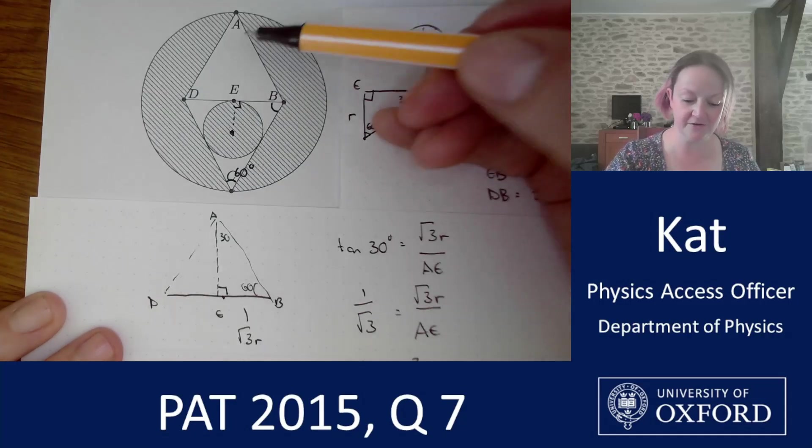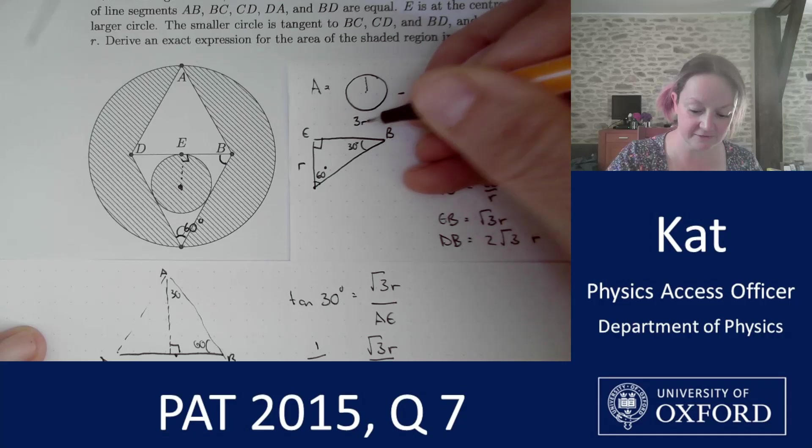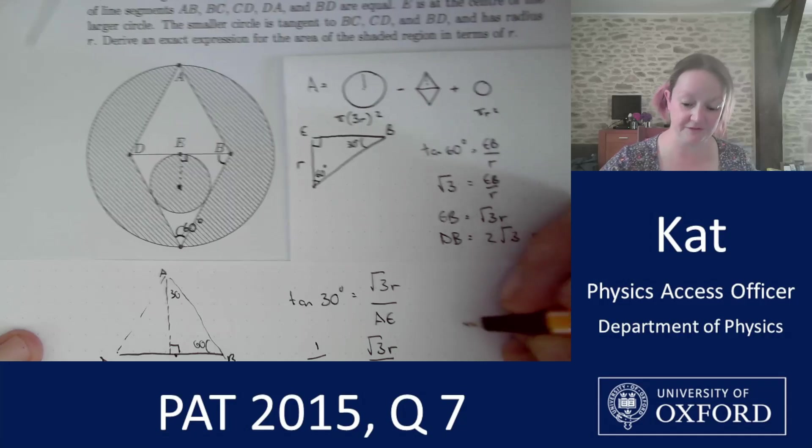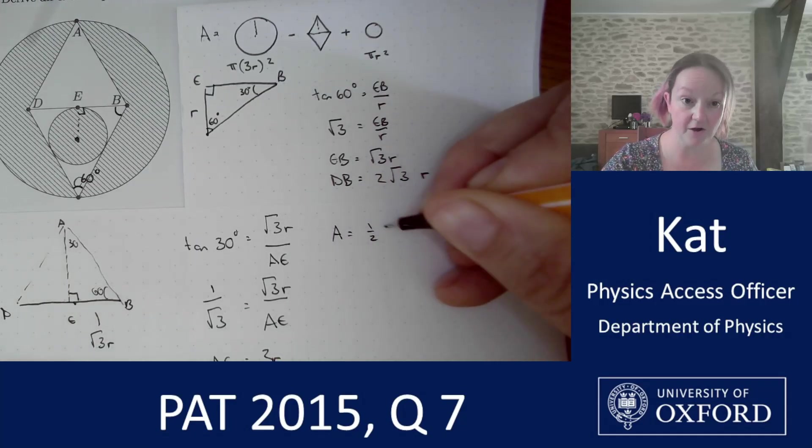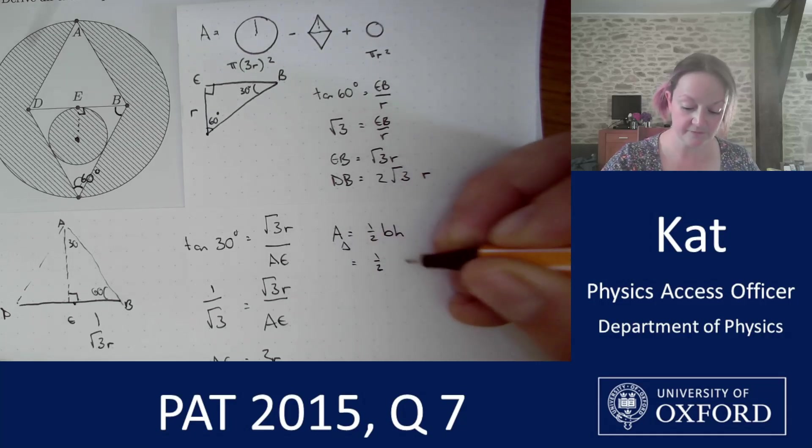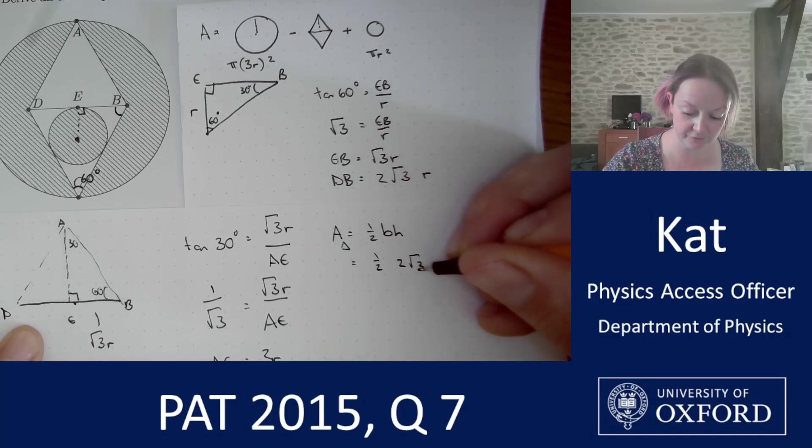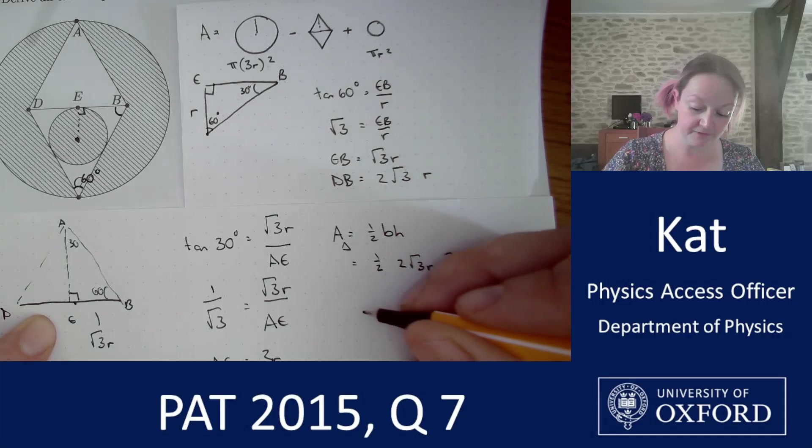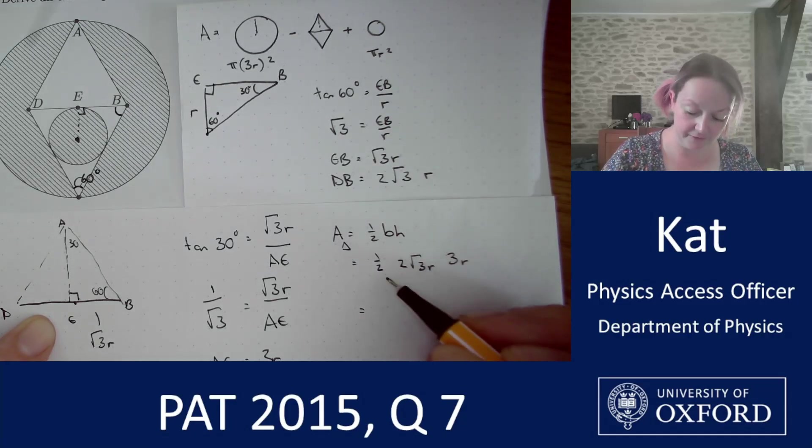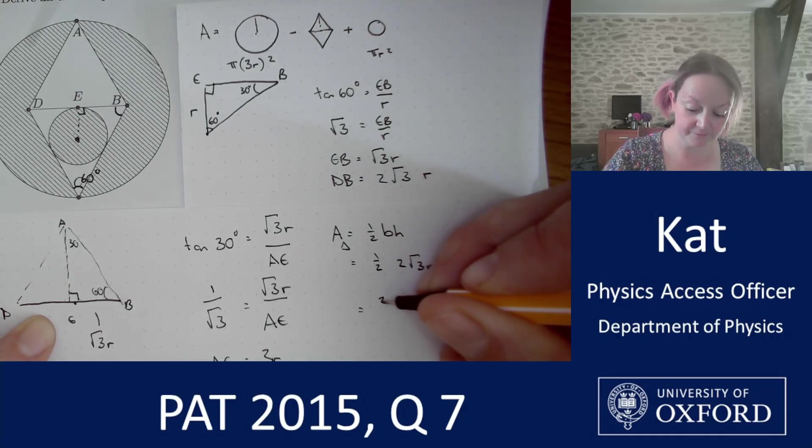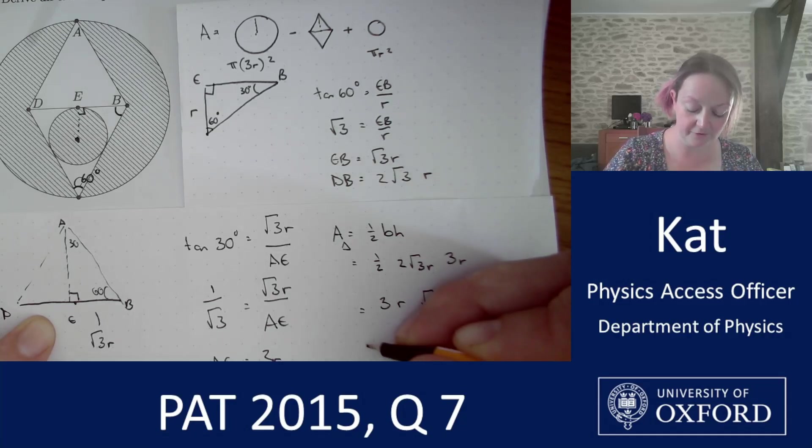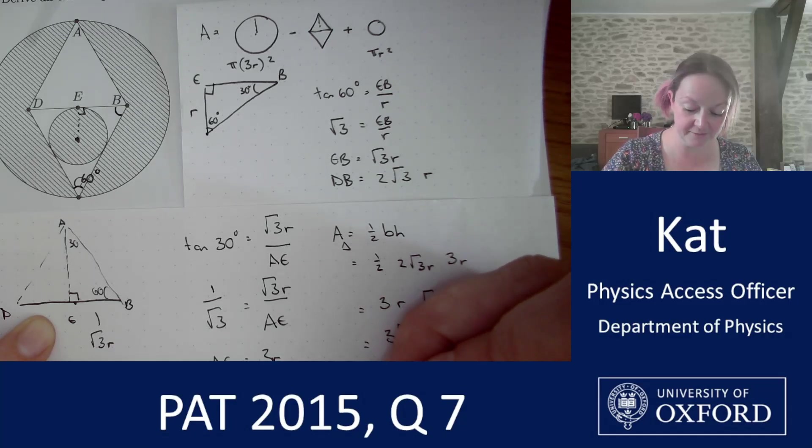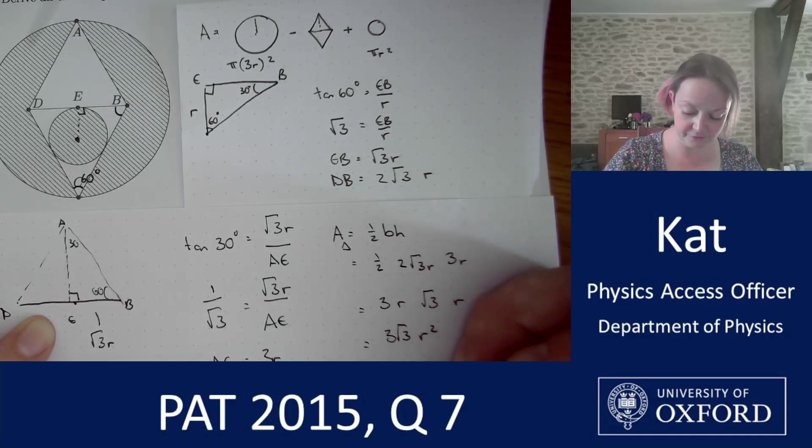Actually, I'm pretty much there. So I now know that AE is 3R, so I can come back and say that this is going to be pi times 3R squared for the area of that big one. And for the area of the diamond, which I'll put in here, I'm going to have half times base times height for the triangle. The base is my DB, so twice root 3R. My perpendicular height is my AE, which I just worked out as being 3R. And if I multiply all of those together, I come out with 3 times 2 is 6 times a half is 3. So 3R root 3R or 3 root 3R squared. Double that to get the area of the diamond. And we have 6 root 3R squared.